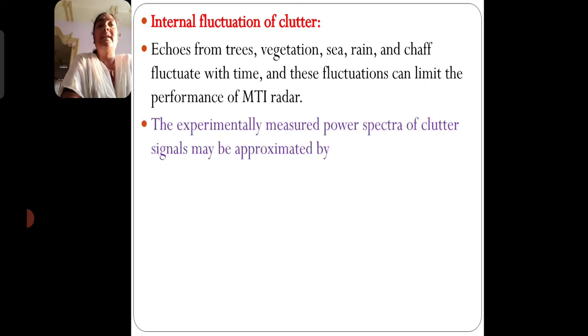So next one is the internal fluctuations of the clutter. Echoes from trees, vegetation, sea, rain and chaff fluctuate with time and these fluctuations can limit the performance of the MTI radar. The experimentally measured power spectrum of the clutter signal may be approximated by...